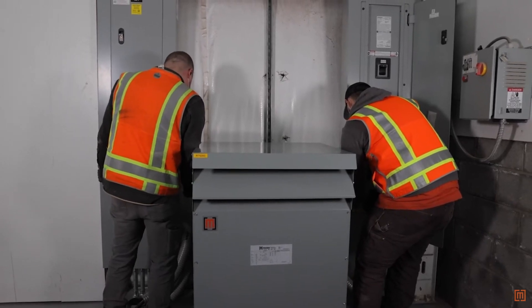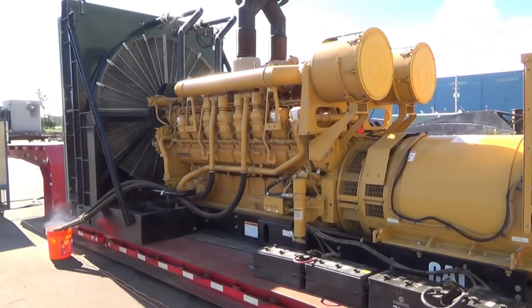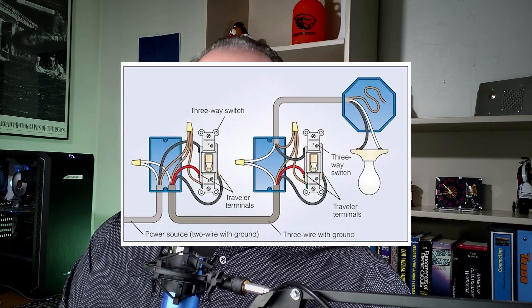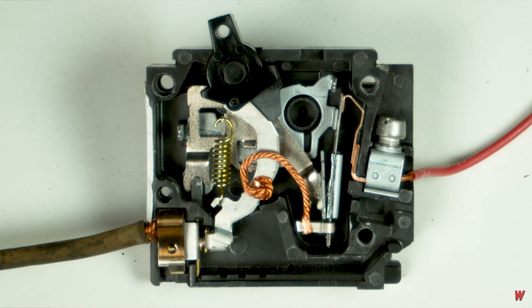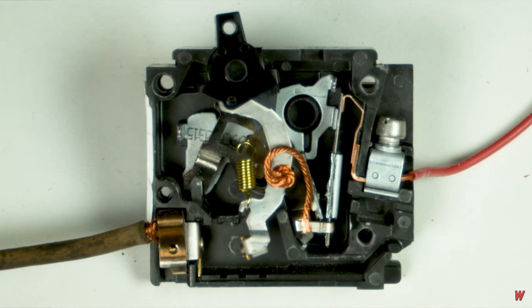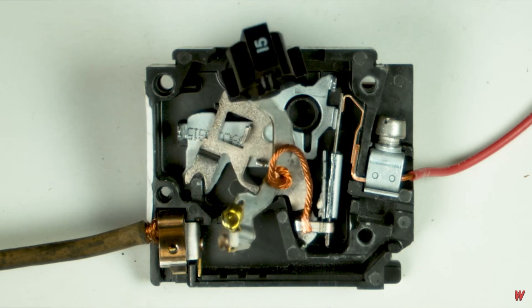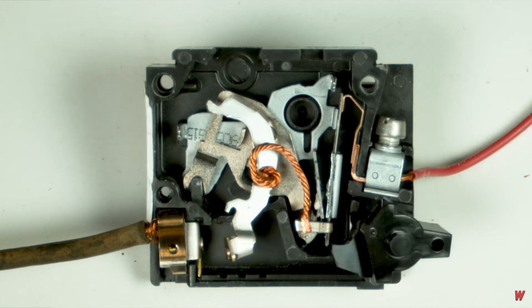We need to understand topics like the basics of circuits, parallel and series circuits, how generators work, how motors work, how transformers work, three-phase and single-phase power, and even how three-way and four-way switches work for lighting control. We need to know volts, amps, watts, power factor, and volt-amps. We need to understand how circuit breakers work — both the thermal and magnetic portions — how fuses work, how to do short circuit calculations or fault currents, and even advanced things like arc flash studies.